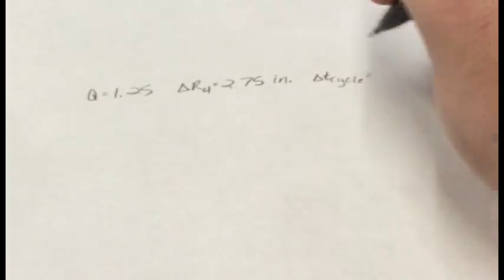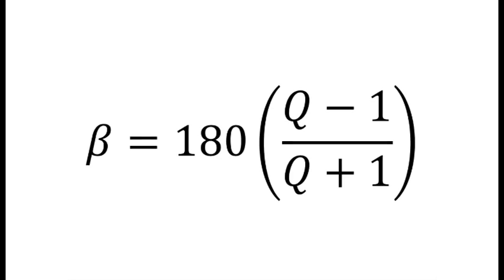In order to find the link lengths, we must first find the imbalance angle beta. Beta can be found using this equation: Beta equals 180 times Q minus 1 over Q plus 1.